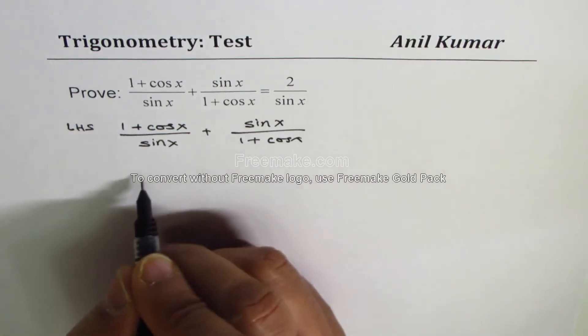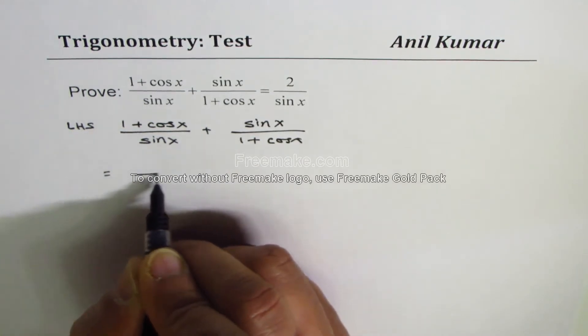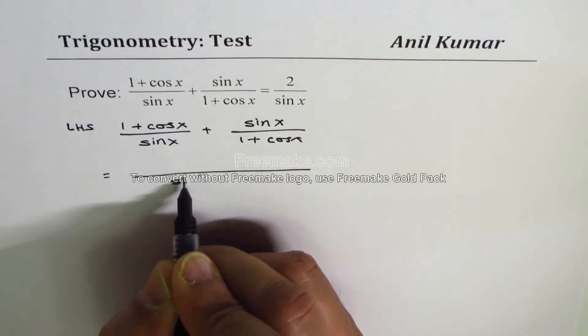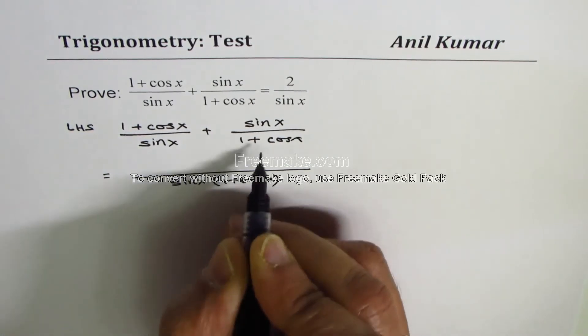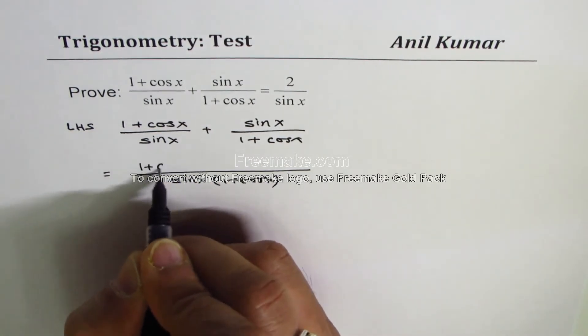We could take the denominator as sin x times (1 + cos x). Cross multiply so we get (1 + cos x) whole square.